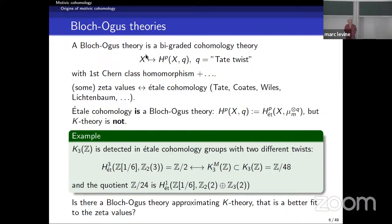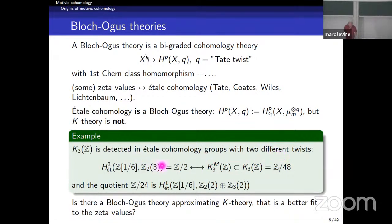K_3(Z) is detected in étale cohomology groups in two different places. The Z/2 which is the Milnor K part is detected by the weight-three H^3, and the Z/24 quotient is detected by H^1. The twists are three, but the zeta value is at −1, which via the functional equation is 1−2, so the weight two is exactly right and gives you the 24. So one can ask if there's a Bloch-Ogus theory that approximates K-theory and fits better to the zeta values.